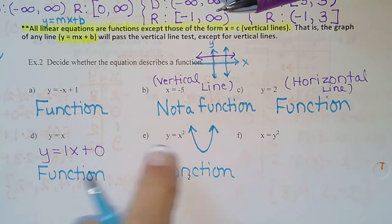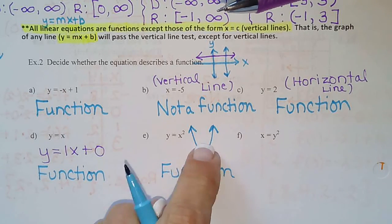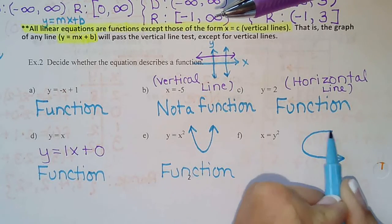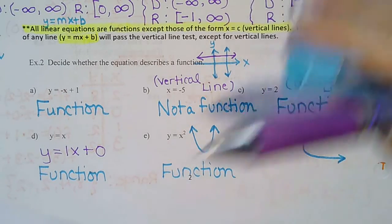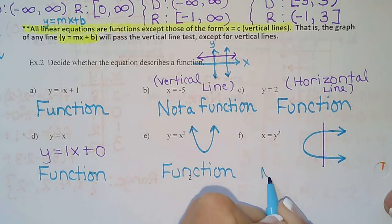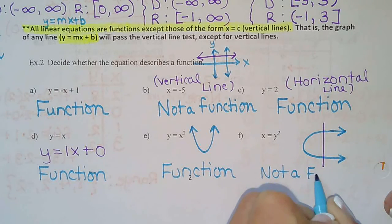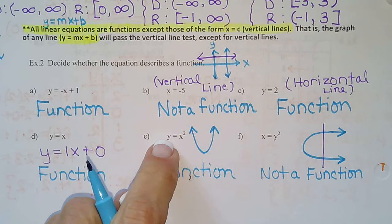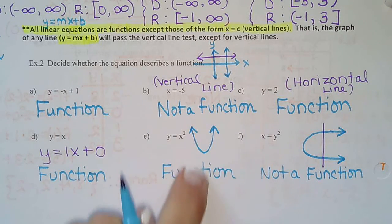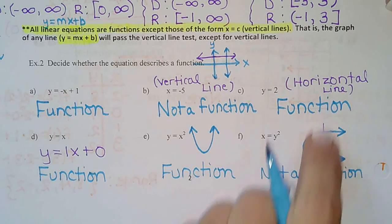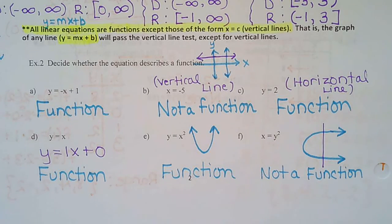When it's x equals something with y squared, that's a horizontal parabola — and that one does not pass the vertical line test, so it's not a function. We solve for y, giving the vertical parabola; but when it's solved for x and has y squared, it's a horizontal parabola, and that one does not pass the vertical line test.